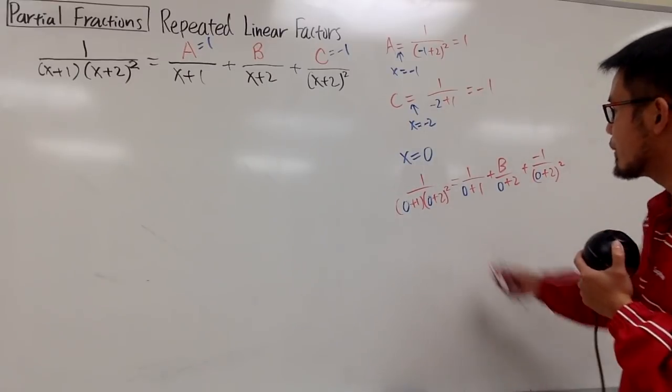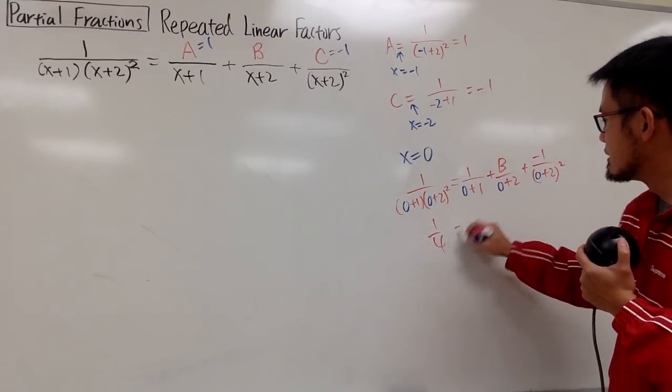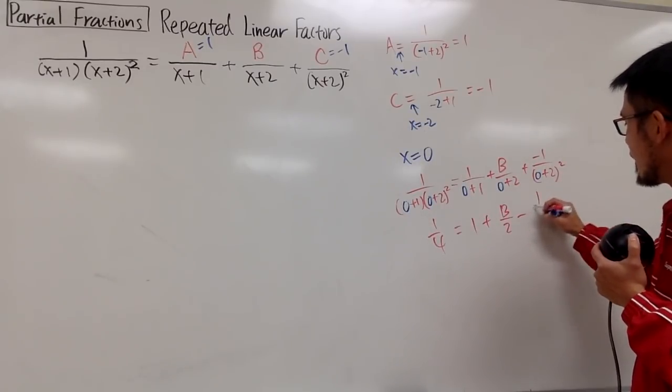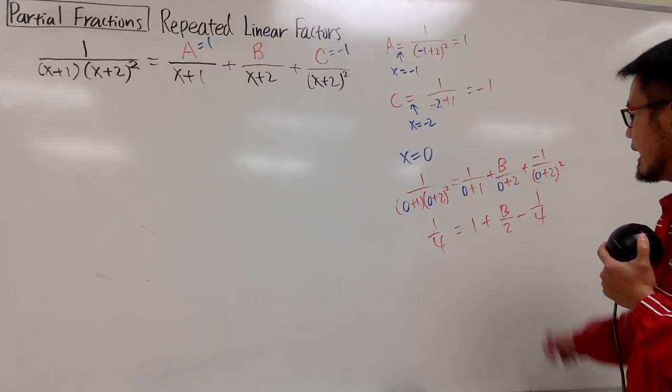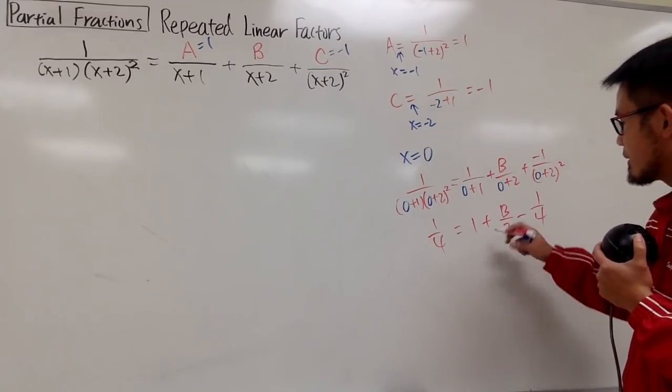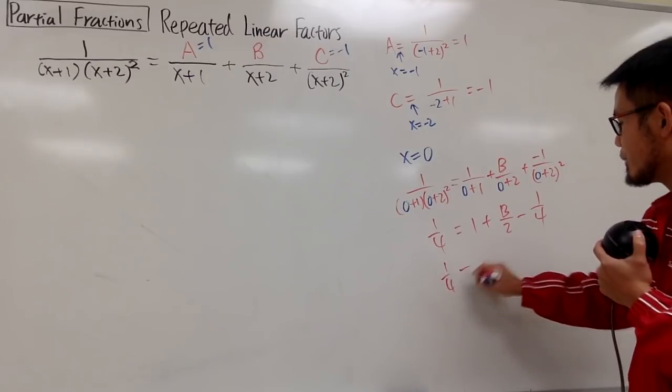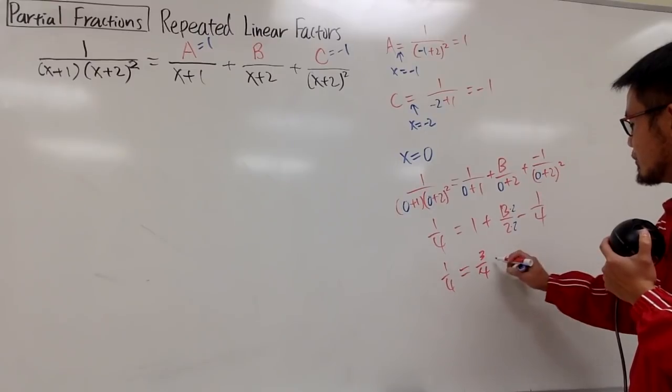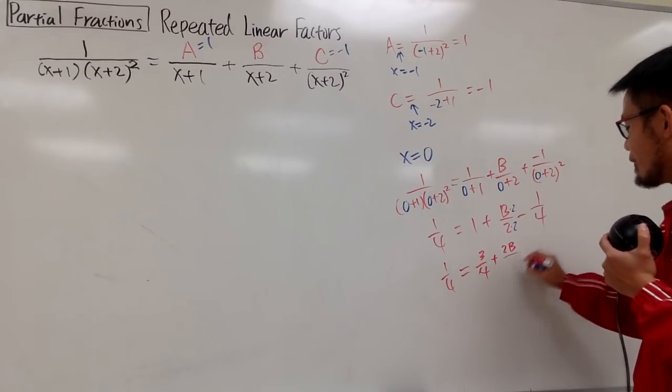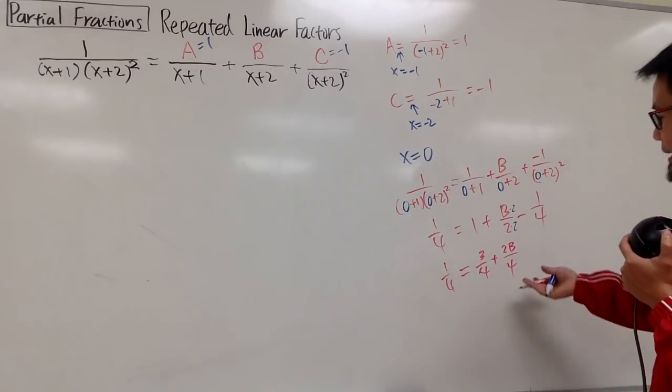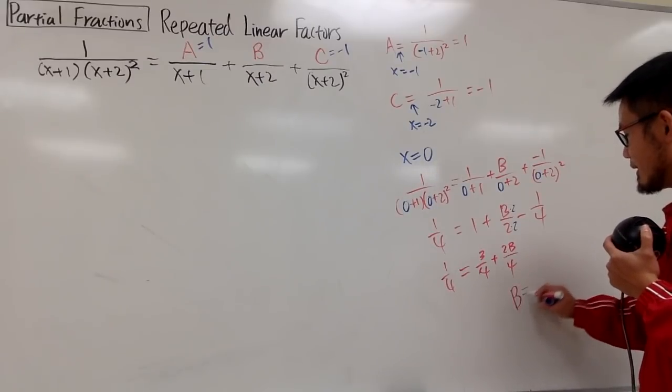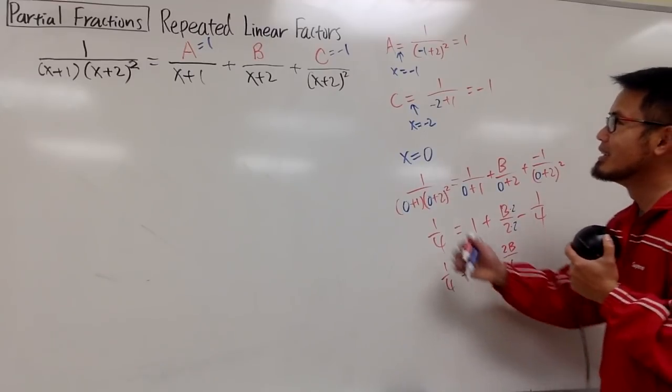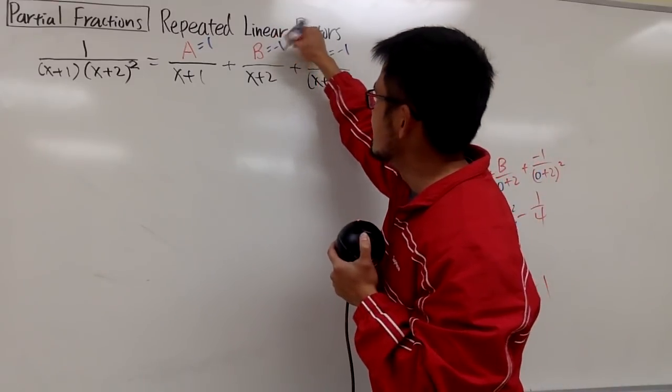And you can work this out real quick. This is going to give you 1 over 4. This is 1 plus b over 2. And this is minus 1 over 4. And seriously, you can do whatever you'd like. This is 1 over 4, equal to this and that is 3 over 4. And you can get the common denominator, which is plus 2b over 4. And by now, you should see b should be negative 1, because 2 times negative 1 is negative 2, plus 3 is 1. So we get it. b is equal to negative 1.